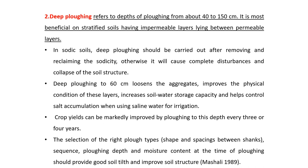The second important management practice is deep plowing. Deep plowing refers to the depth of plowing from about 40 to 150 cm. It is most beneficial on stratified soils having impermeable layers lying between permeable layers. In sodic soils, deep plowing should be carried out after removing and reclaiming the sodicity, otherwise it will cause complete disturbance and collapse of the soil structure. Deep plowing to 60 cm loosens the aggregates, improves the physical conditions of these layers, increases soil water storage capacity and helps control salt accumulation when using saline water for irrigation. Crop yield can be markedly improved by plowing to this depth every 3 or 4 years.